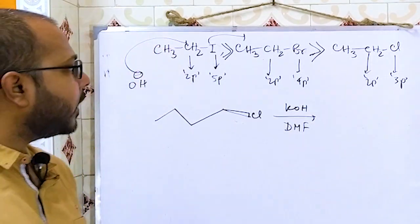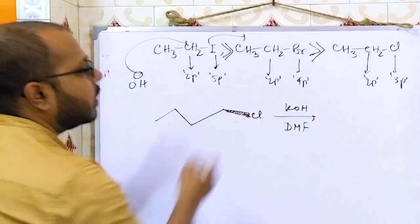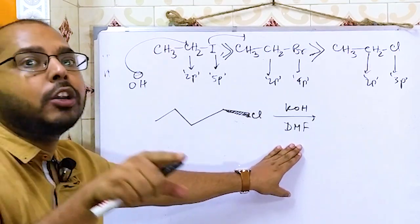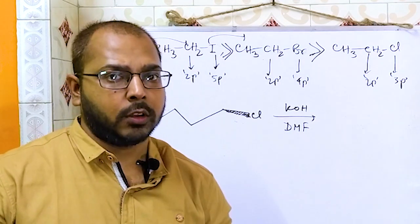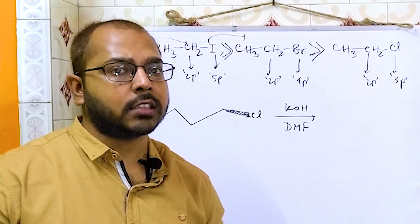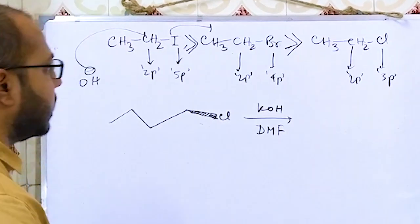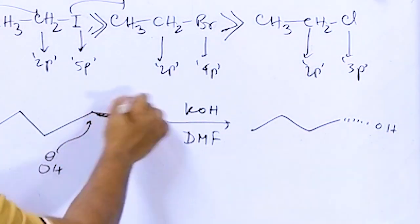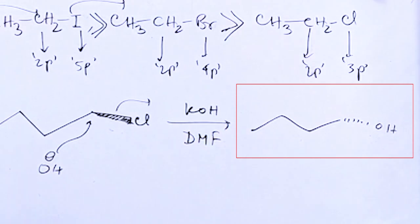We have to find the product. Chlorine is present above the plane. Polar aprotic solvent favors SN2 because carbocation formation is not going to happen — the nucleophile will attack and inversion will take place. So OH⁻ will attack from the opposite side — below the plane — since chlorine is above the plane. That will be our product.